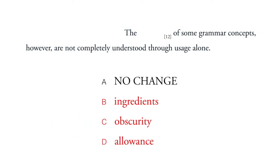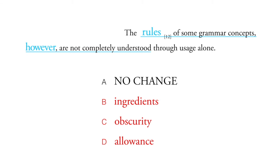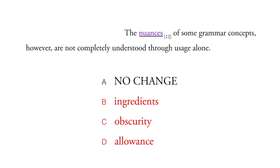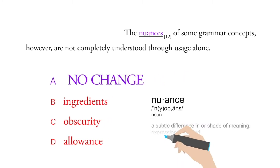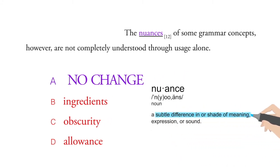We need something that's more like the rules, however, right? So nuances. Choice A is going to be our best choice. Nuances mean the subtle differences in meaning. And that actually fits perfectly in this sentence.